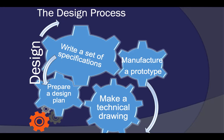We come up with a design plan: how is this going to look, what are the dimensions, how are things going to be connected to each other? We make a technical drawing and then manufacture a prototype. A prototype is basically a model of what the actual product will be like.